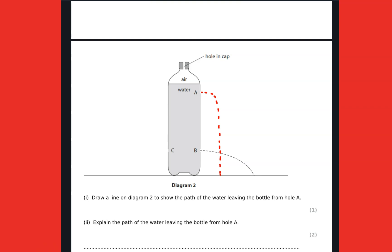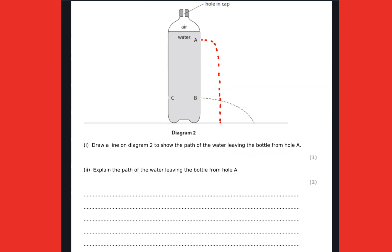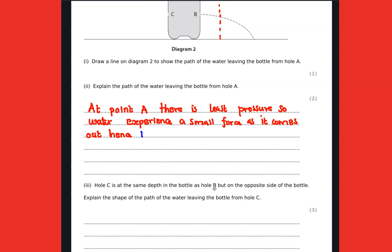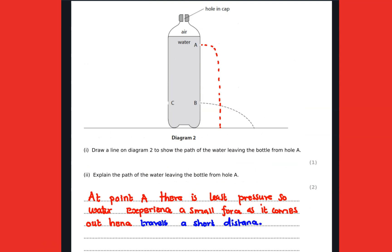C is at the same level, so explain the path of water leaving from hole A. So here we are supposed to give the reason why is that the case, why is it the way we have drawn there. And we are going to say at point A there is least pressure, so water will experience a small force as it comes out of the hole, hence travels a short distance. And that's exactly what I've defined there.